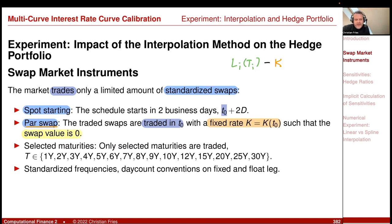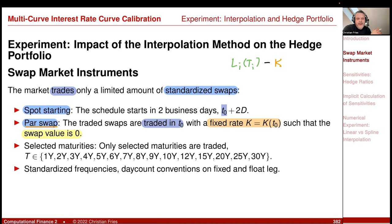That's actually nice because initially you never need to pay money for this financial product. You get a product that has value zero and they just quote the fixed rate. So you say: I would like a five-year swap. Then the market says: you have to pay 3.2% on the fixed side, or if you do it the other way around, you will receive 3.2% on the fixed side. So the market only trades spot starting par swaps. The next thing is that we trade only selected maturities.